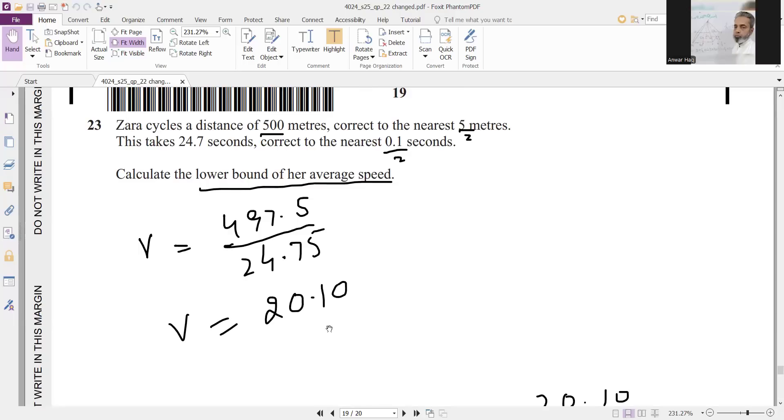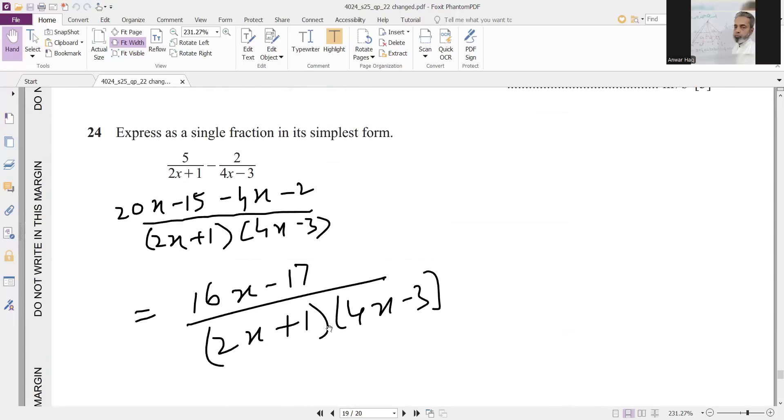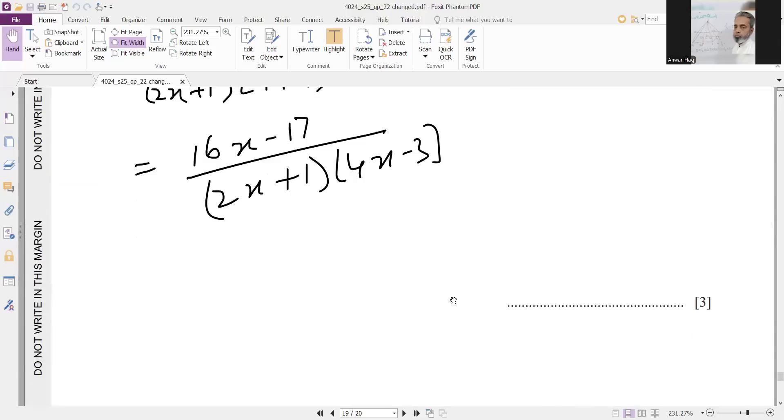Now in this, express as a single fraction in its simplest form. Take the LCM of the denominator. You will not open the brackets of denominator because you are converting into single fraction. Multiply 5 by 4x minus 3, you will get 20x minus 15. Multiply 2 by 2x plus 1. There is a negative sign, so all the signs will change. 4x minus 2. By simplification, this is 16x minus 17 over 2x plus 1 times 4x minus 3.